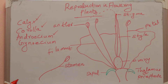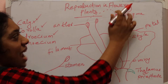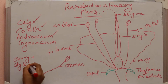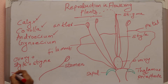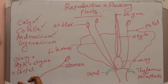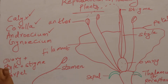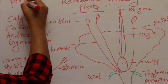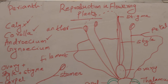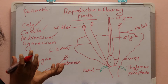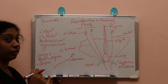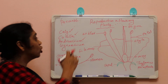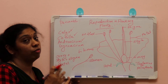The gynoecium is the female reproductive part, consisting of the ovary, style, and stigma — collectively called carpel or pistil. Calyx and corolla together are called perianth, and they are also called the accessory whorls of the flower because their function is protection. Androecium and gynoecium are called the essential whorls or reproductive whorls because they take part directly in fertilization.